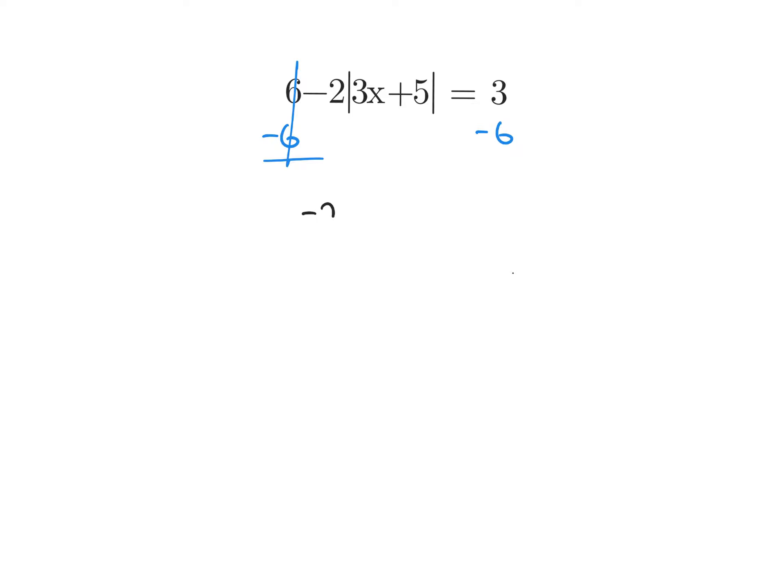Now I'm left with the expression negative 2 times the absolute value of 3x plus 5, equal to negative 3. At this point I'm not done, and here is a mistake a lot of people keep making. They get to this spot and they want to distribute, or they see this negative 2 and decide to add 2. You can't do that.